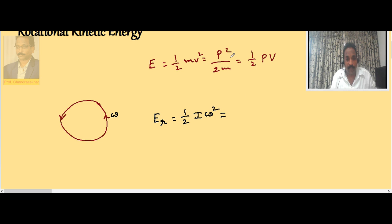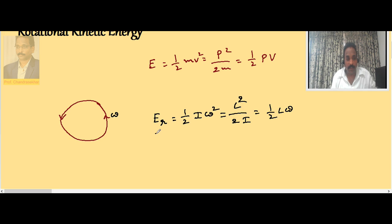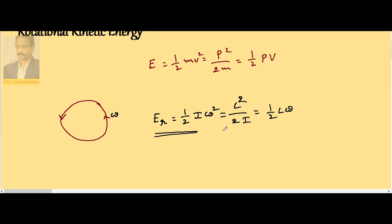In a similar way to the linear equations, I can write rotational kinetic energy as L squared by 2I, where angular momentum plays the role of linear momentum. So it is also half L omega. The rotational kinetic energy — half I omega squared, or L squared by 2I, or half L omega — is the kinetic energy associated with a rotating body rotating with angular velocity omega.